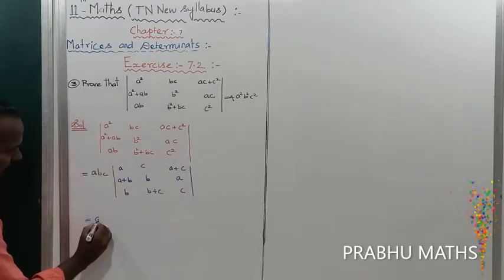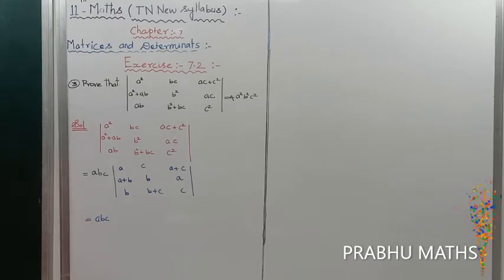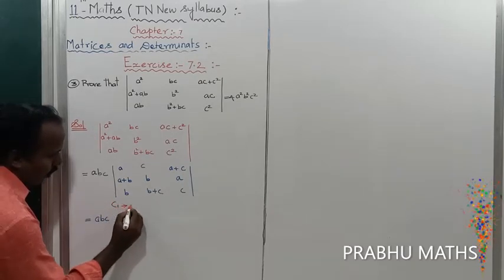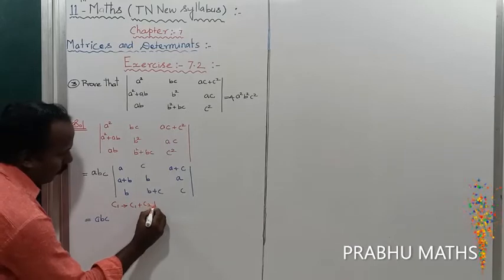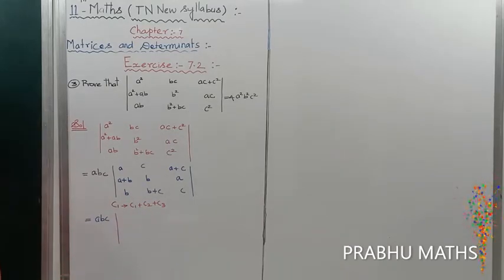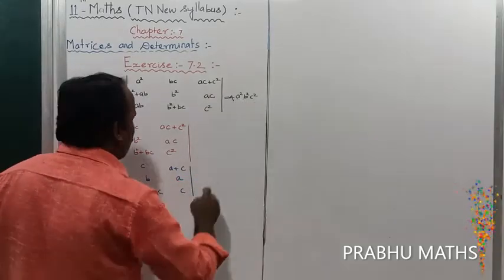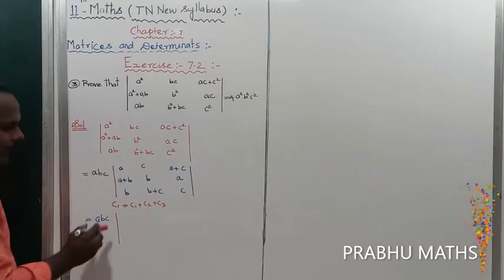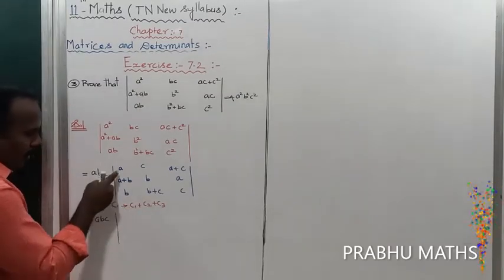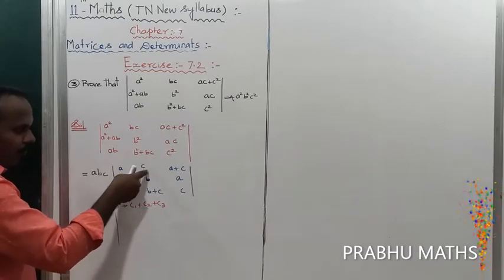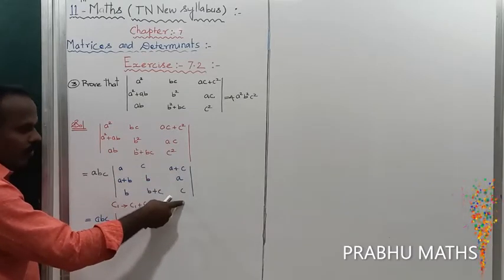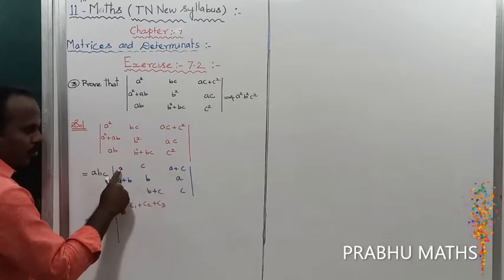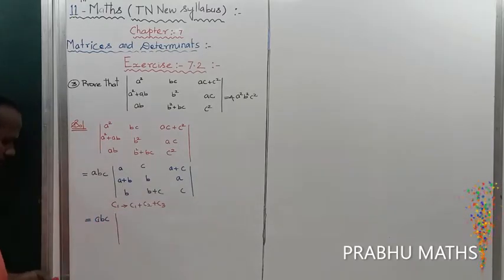That gives us a plus b plus c. Now apply the column rule: C1 tends to C1 plus C2 plus C3. This is to prove a squared plus b squared plus c squared. By applying C1 → C1 plus C2 plus C3, we get a plus c plus a plus c, giving two times of a plus c.